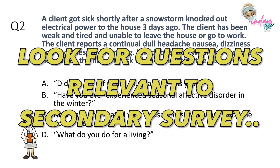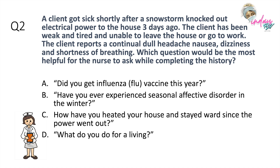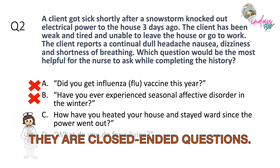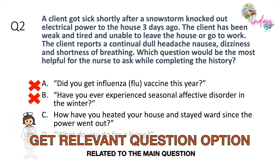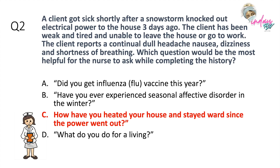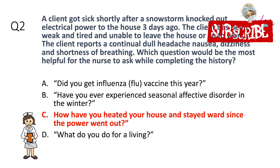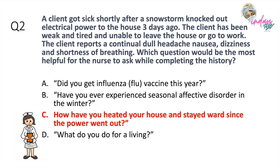We are looking for questions that can elicit information for history taking. First, eliminate questions that elicit only yes or no answers — those are: A) 'Did you get the influenza vaccine this year?' and B) 'Have you ever experienced seasonal affective disorder in the winter?' We cannot get complete information from yes/no answers. Now we are left with two choices, and we need the relevant question that can help us elicit information. Always go back to the question: what connection can I find in the options?